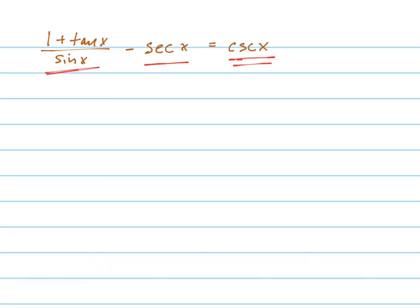Let's multiply the second one by sine, sine over sine. So I have 1 plus tan x over sine x, minus secant x over sine x.